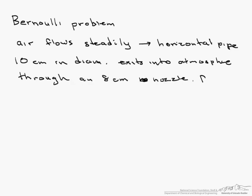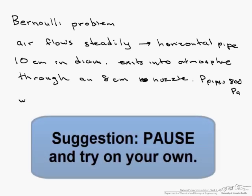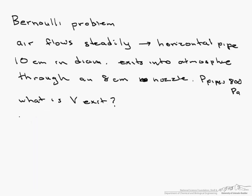It exits into the atmosphere through an 8 centimeter nozzle. The pressure in the pipe is 800 pascals, and what we want to know is what is the velocity at the exit. So let's start by getting rid of some of our variables, or our terms in Bernoulli.